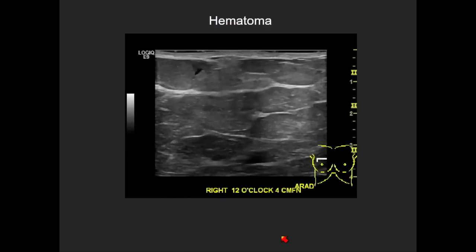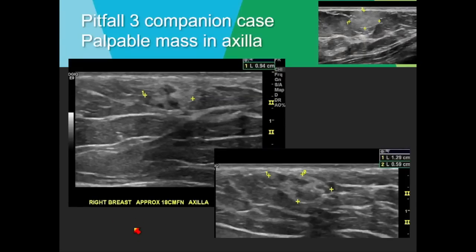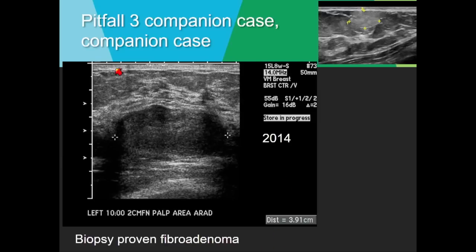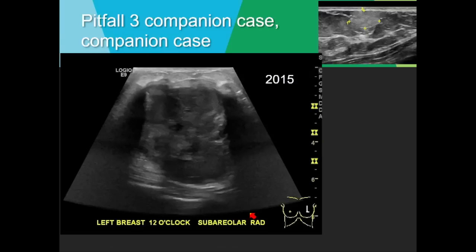Another echogenic mass: a patient with a palpable axillary mass, not visible on mammogram. Ultrasound showed a mixed echogenicity mass with hyperechoic and hypoechoic components — this turned out to be a benign phylloides tumor. A related companion: a biopsy-proven fibroadenoma in 2014 that looked typical; less than a year later in 2015, the patient returned with a rapidly enlarging mass — it came back as a malignant phylloides, probably a fibroadenoma with a phylloides component that took off.